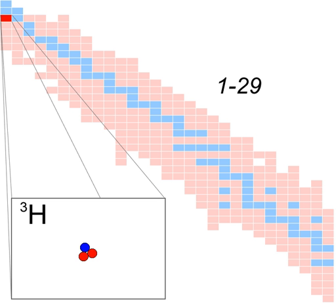Tritium is an important fuel for controlled nuclear fusion in both magnetic confinement and inertial confinement fusion reactor designs. The experimental fusion reactor ITER and the National Ignition Facility will use deuterium-tritium fuel. The deuterium-tritium reaction is favorable since it has the largest fusion cross-section and reaches this maximum cross-section at the lowest energy of any potential fusion fuel. The Tritium Systems Test Assembly was a facility at Los Alamos National Laboratory dedicated to the development of technologies required for fusion-relevant deuterium-tritium processing.